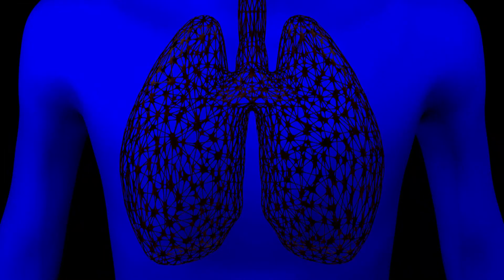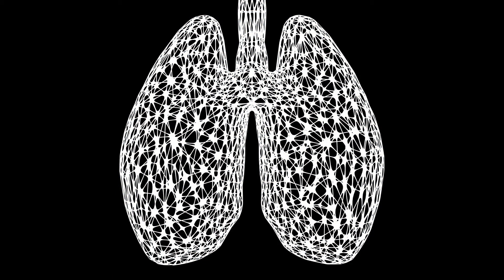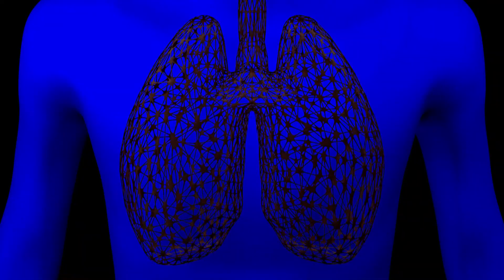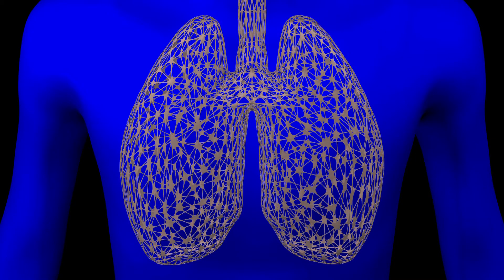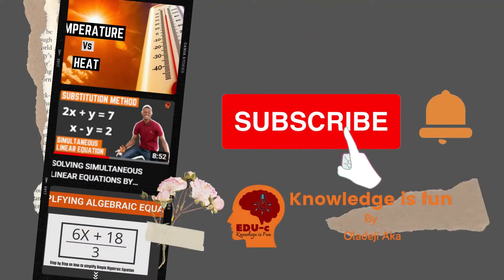We need food and oxygen to grow and replace worn out cells and tissues. These are the only source of supply of energy to our body. One can live without food for a few days, but it is impossible to survive without breathing beyond a minute or so. In this tutorial video, we are going to learn how our respiratory system works.